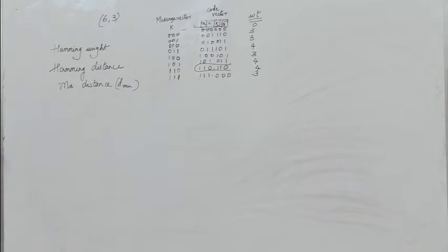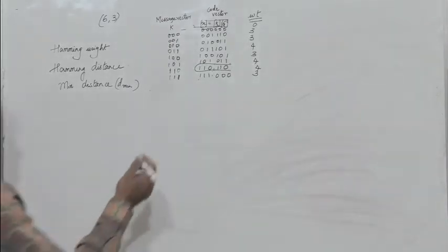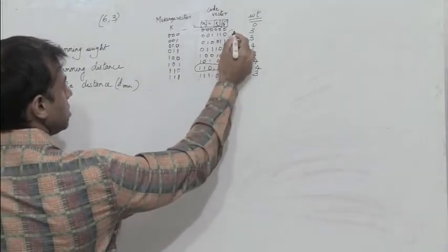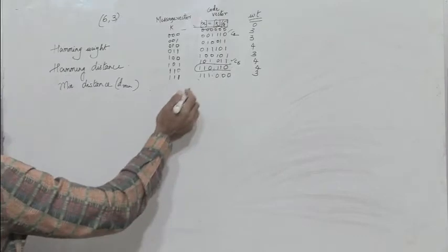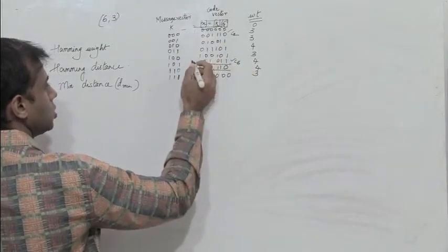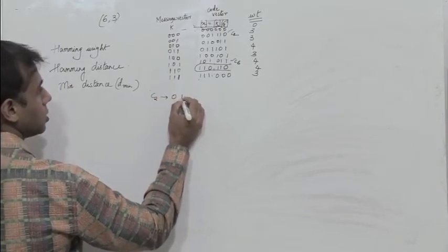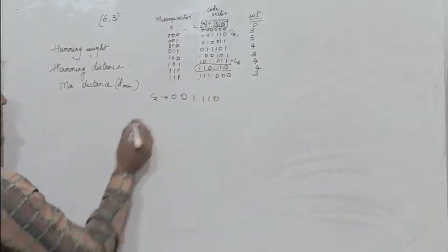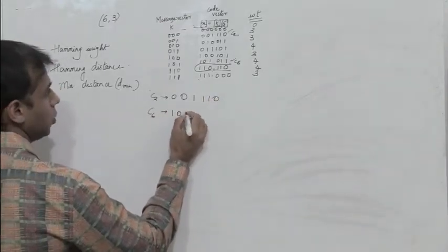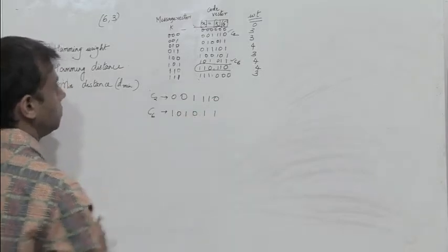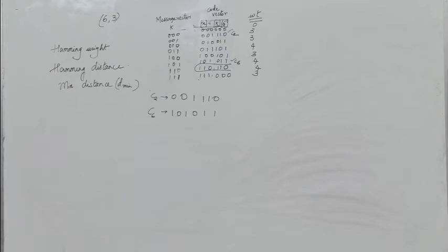Next we find the hamming distance. The hamming distance between any two code words is defined as the number of components in which they differ. Let us consider code words C2 and C6. C2 is 0,1,0,0,1,1,1,0 and C6 is 1,0,1,0,1,1. We need to identify the number of components in which the bit positions differ.